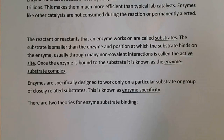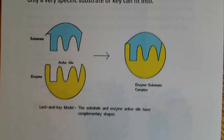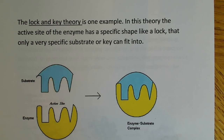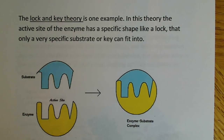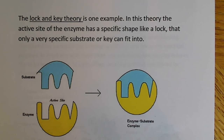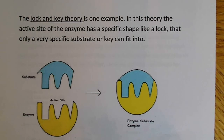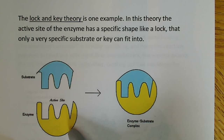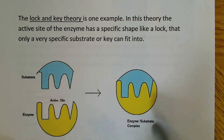There are two main theories for enzyme-substrate binding. The first is called the lock and key theory. In this theory, the active site of the enzyme has a specific shape, like a lock, that only a very specific substrate or key can fit into. Both are rigid structures — neither the substrate nor the enzyme changes upon binding. They are perfectly designed to fit each other, forming an enzyme-substrate complex with no modification occurring to either.